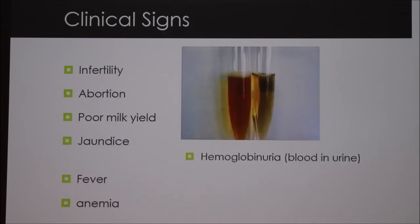Clinical signs include infertility, abortion, poor milk yield, jaundice, hemoglobinuria — which means blood in the urine — fever, and anemia. Most problems go unnoticed long term, which can lead to significant economic loss.